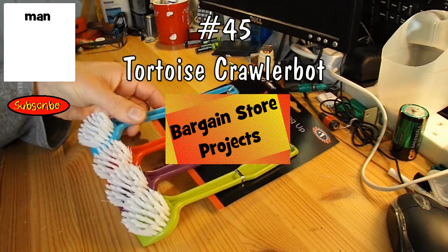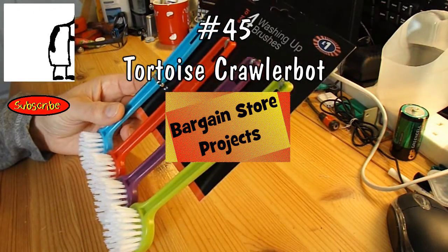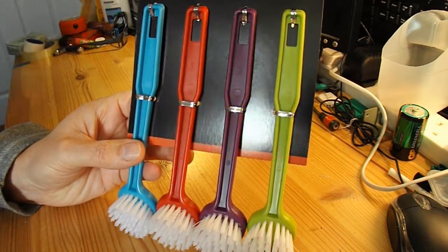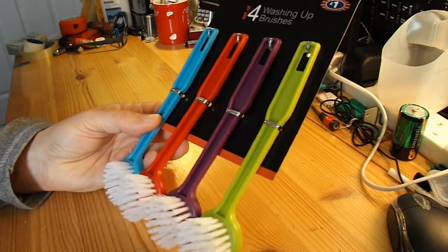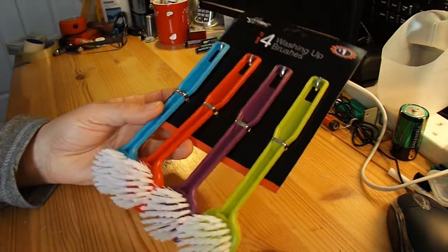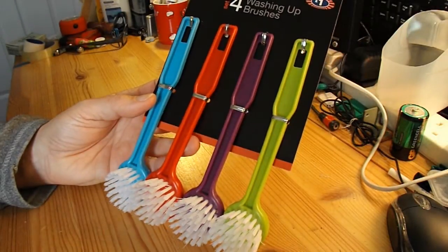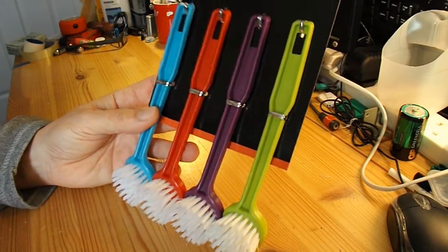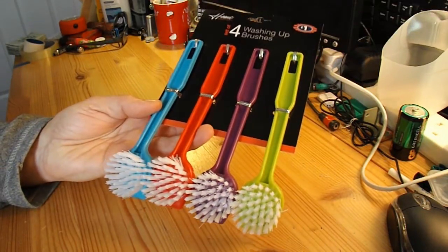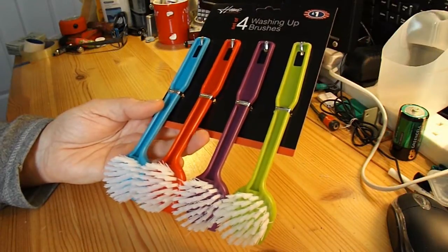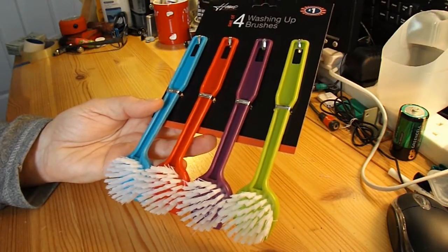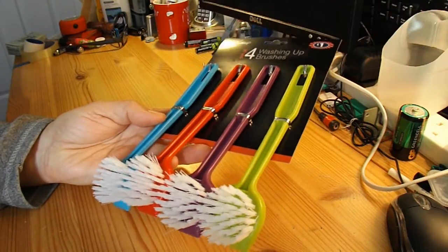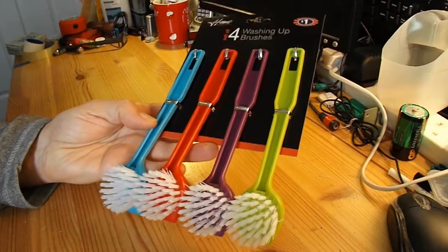I was in one of my favorite bargain stores the other day and spotted this set of four washing-up brushes for a pound. It reminded me of a video I saw on YouTube quite a while ago. I'll have to search for it again so I can link to it. A chap used these as the legs for what I would call a crawler bot, one of those things that shuffles itself along. So I'm going to see if I can replicate it.